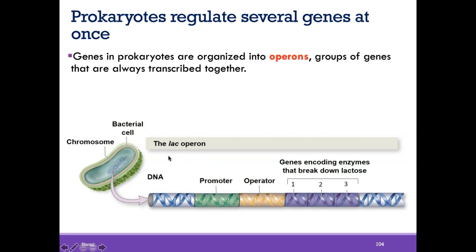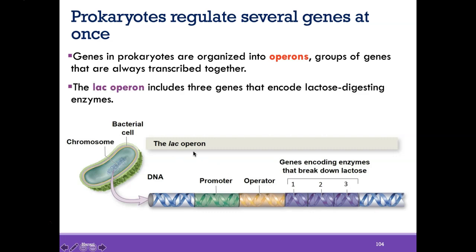One operon is called the lac operon, which has three different genes needed to break down lactose, a sugar. E. coli needs certain enzymes to absorb and degrade lactose. But how does the bacteria know when to make those enzymes only when lactose is present? Why would the bacteria want to make enzymes that break down lactose if there's no lactose to break down?